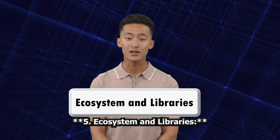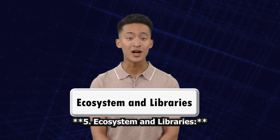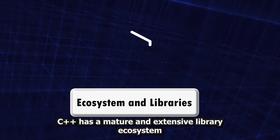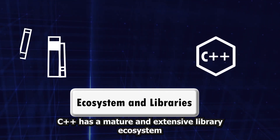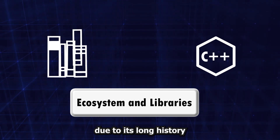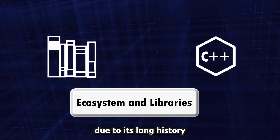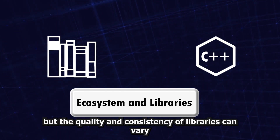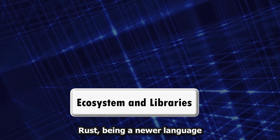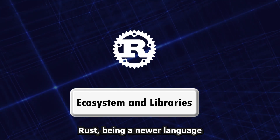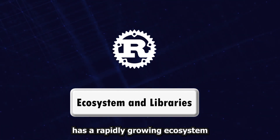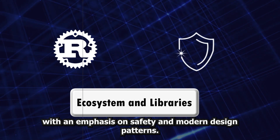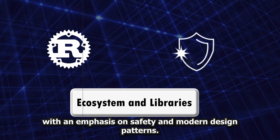5. Ecosystem and Libraries. C++ has a mature and extensive library ecosystem due to its long history, but the quality and consistency of libraries can vary. Rust, being a newer language, has a rapidly growing ecosystem with an emphasis on safety and modern design patterns.